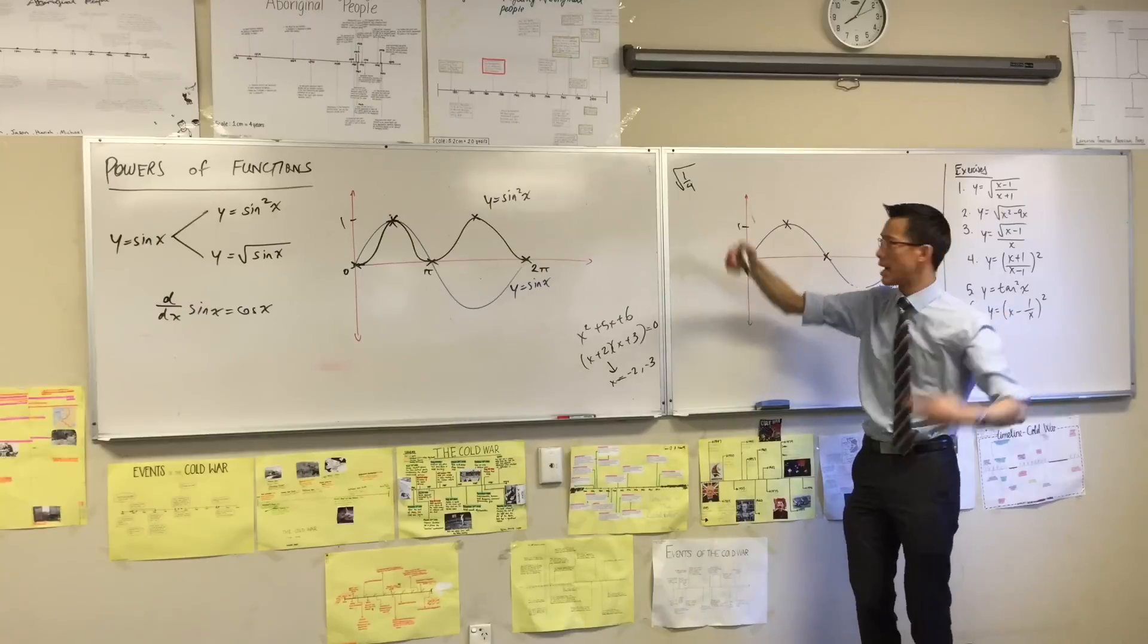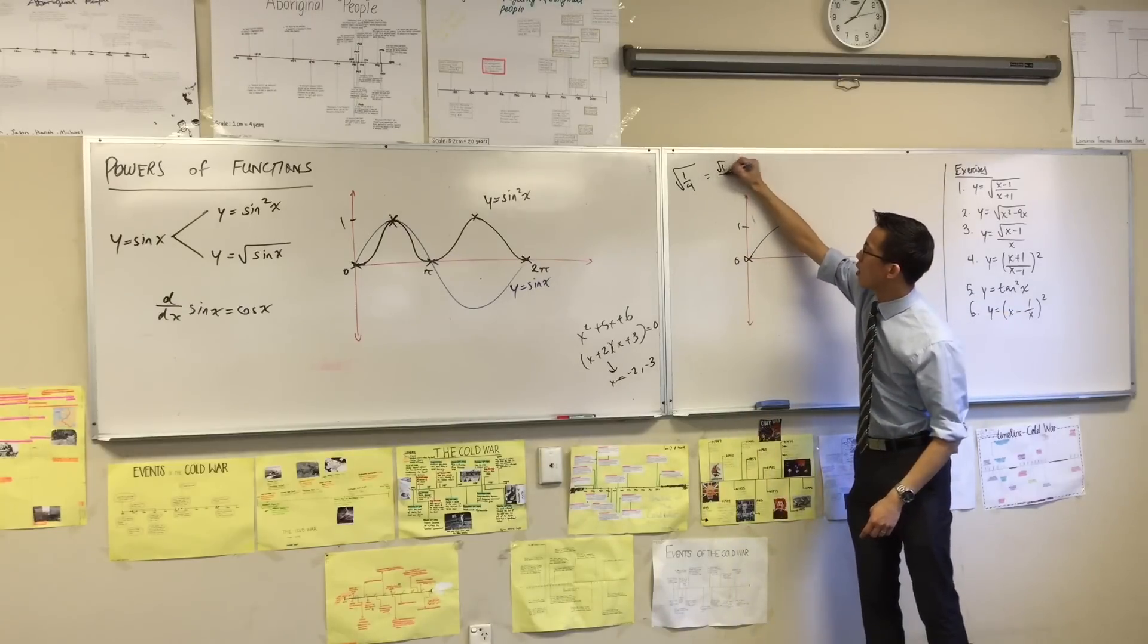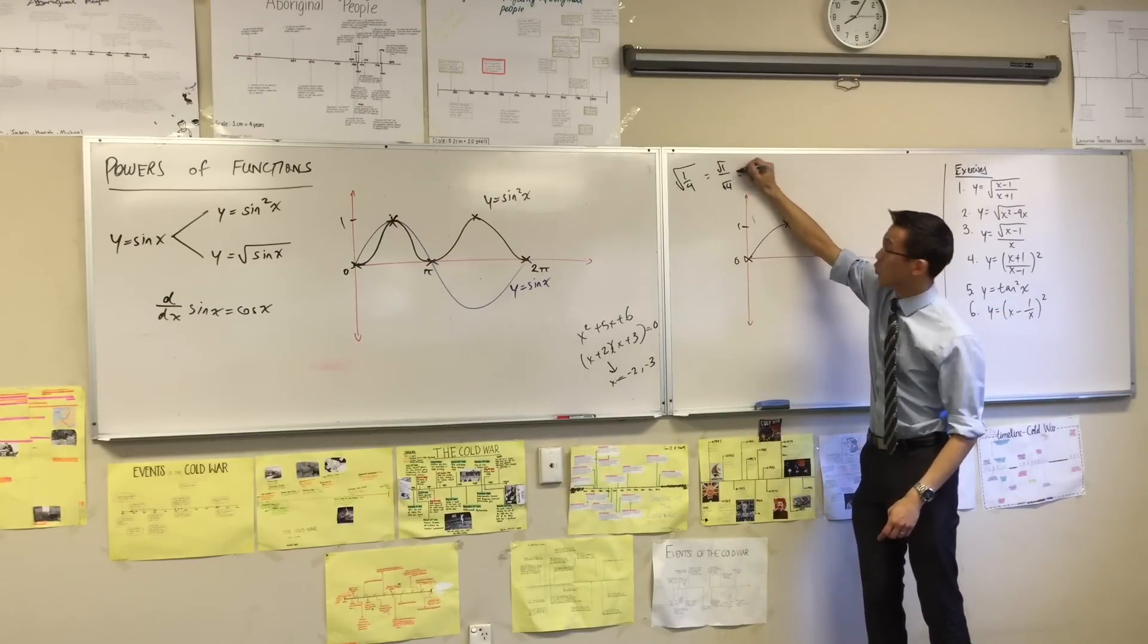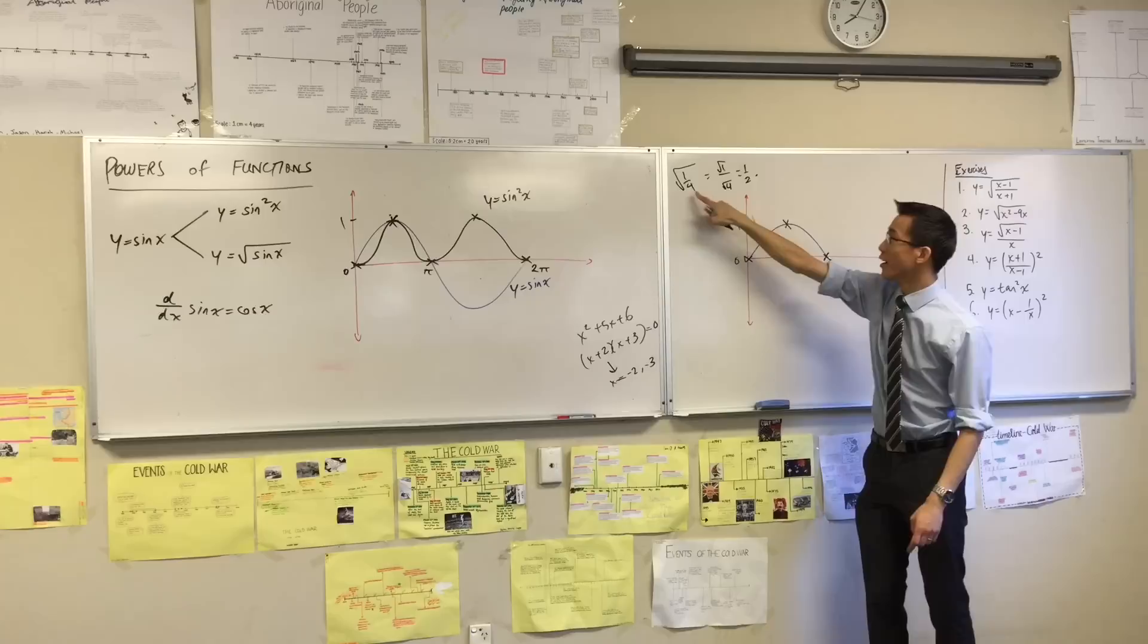Wait, does the square root go up or does it go down? Well, this is the square root of 1 on the square root of 4, which is a half, yes? So a quarter goes up.